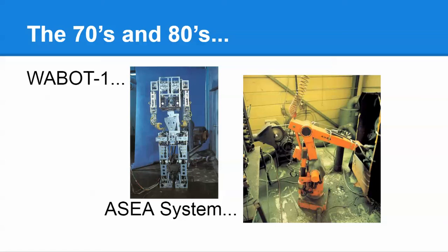In the 1980s, you have the ASEA system — basically the industrial arms you see very prevalently today — created to work in manufacturing environments. Manufacturing started to invest in robotics as they realized the value of these systems, leading to greater demand for robots. That increased demand inspired smaller businesses to spring up to try their hand at creating robots and robot manufacturing systems that we now see as necessities for our way of life.